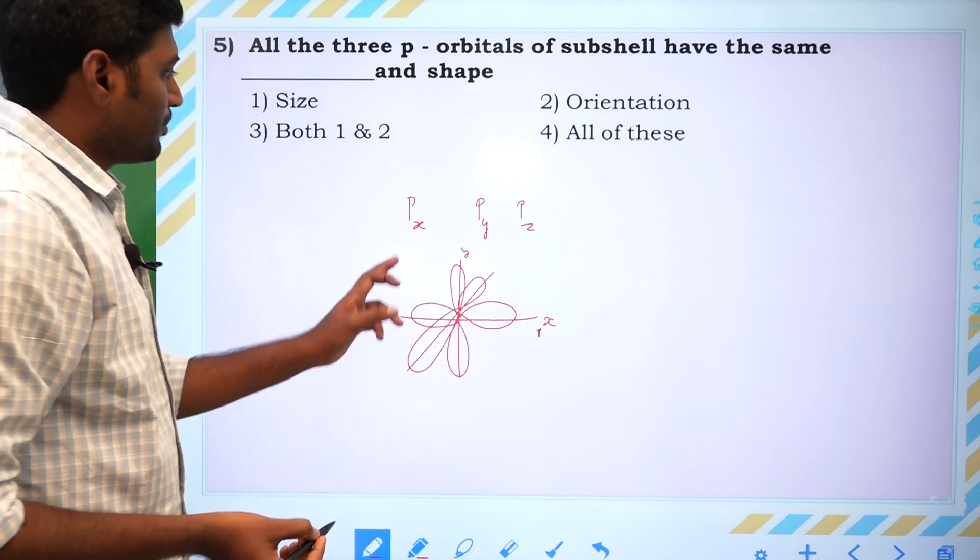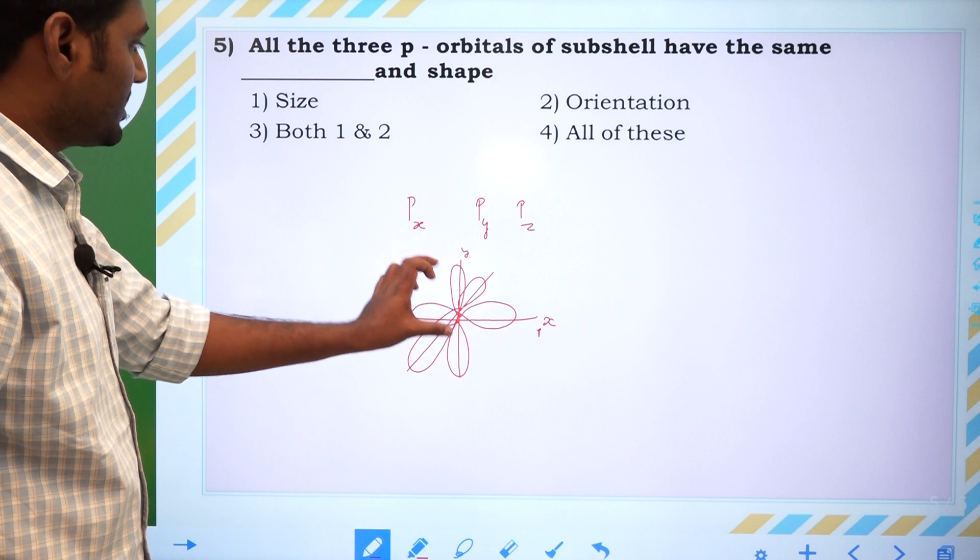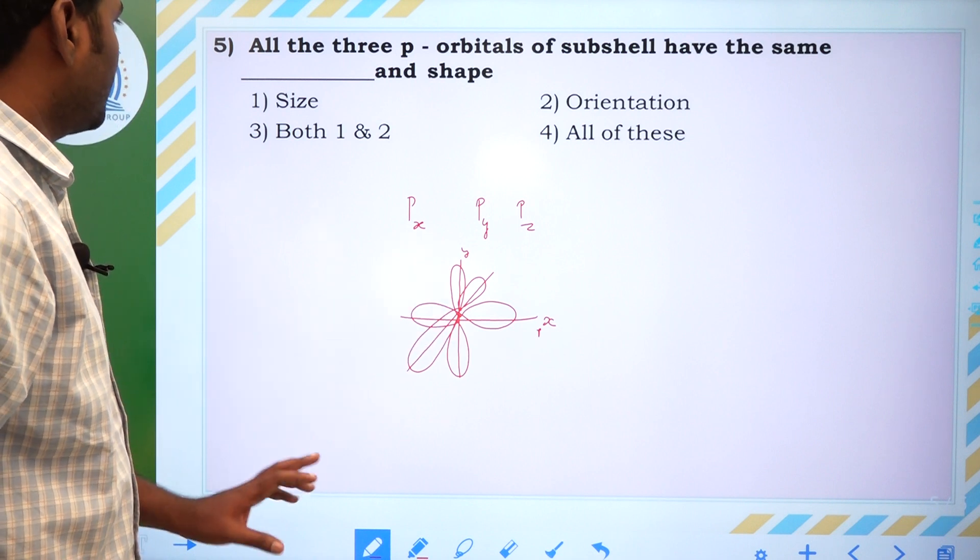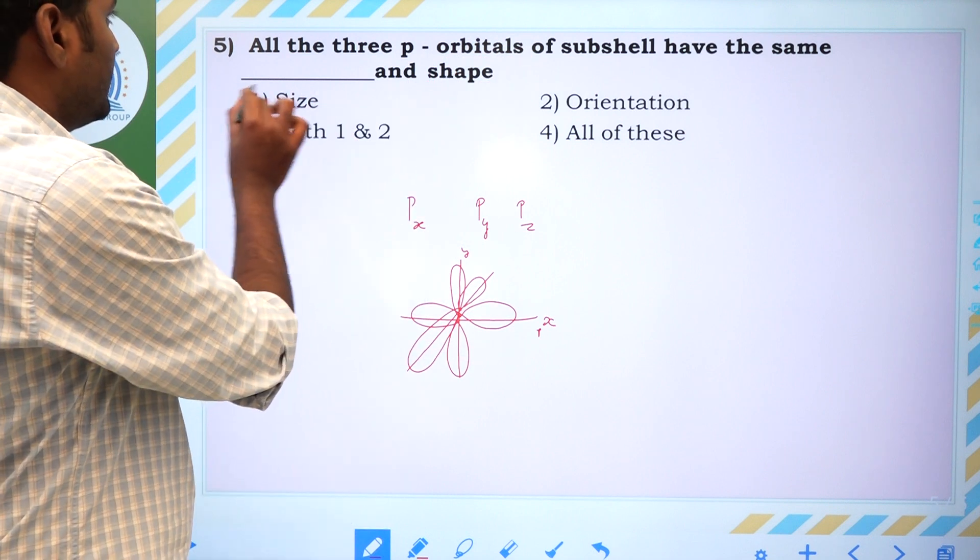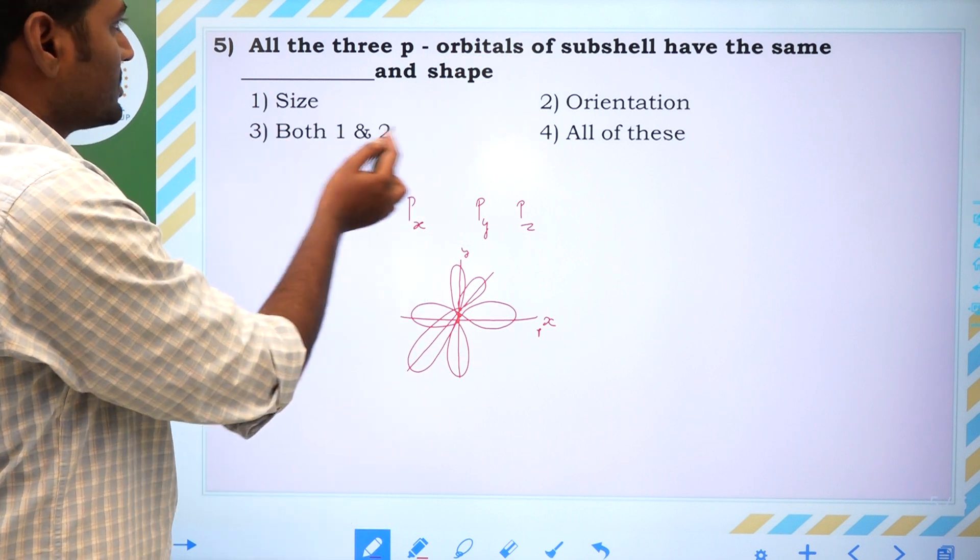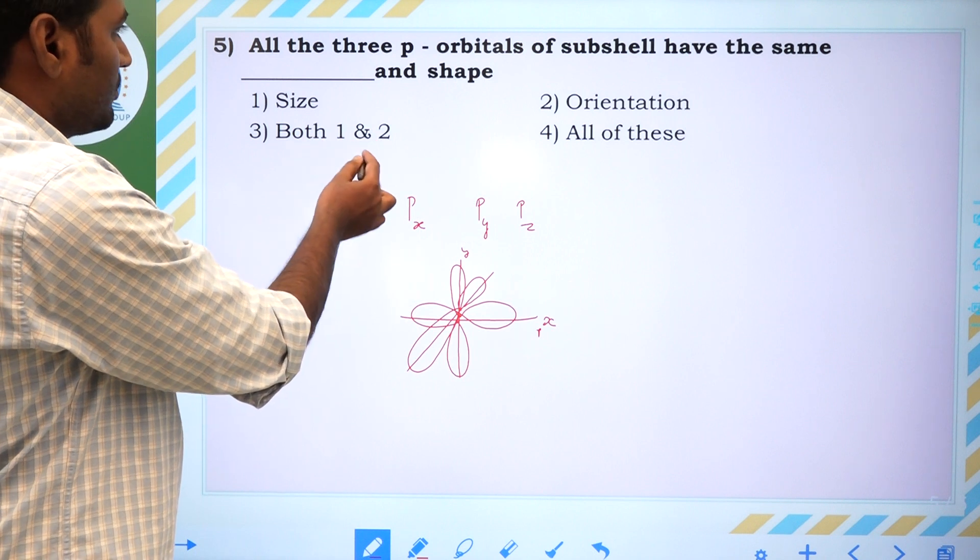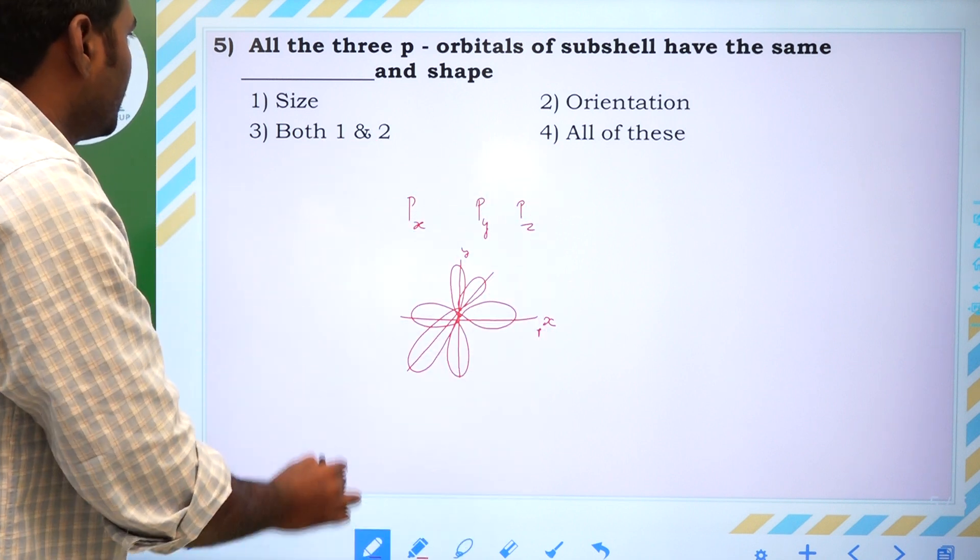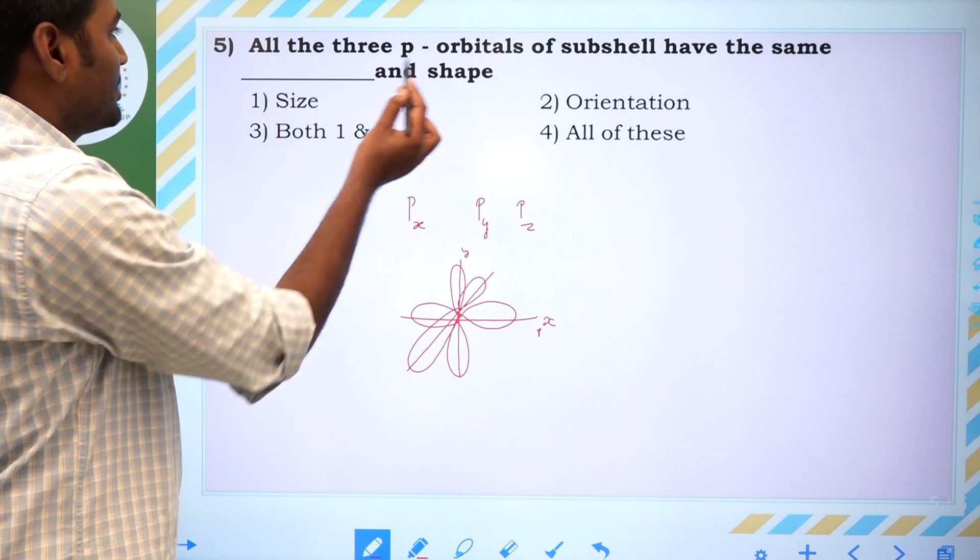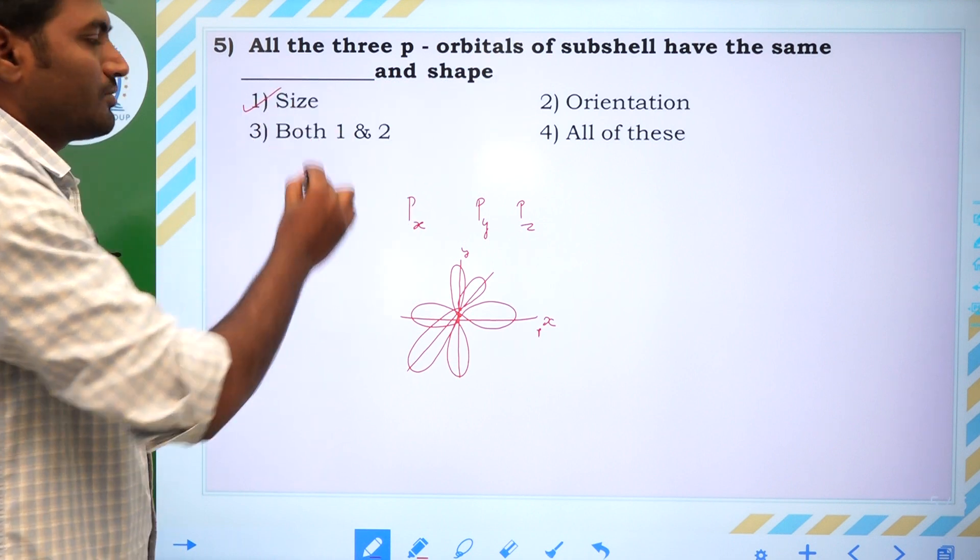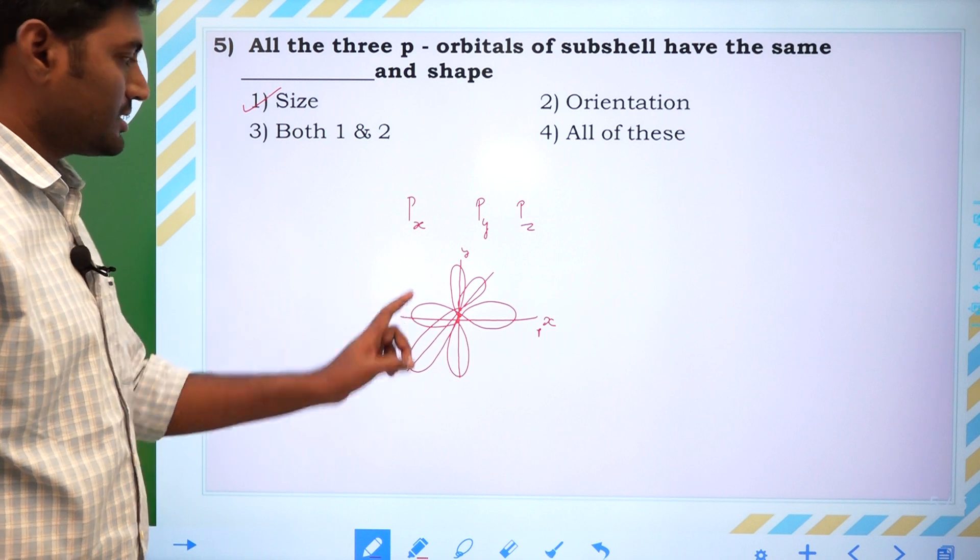PX, PY, PZ have same size and same shape. Answer. All the three P orbitals of subshell have dash, same size and dash, same shape. The answer is same size and shape, first one. Thank you.